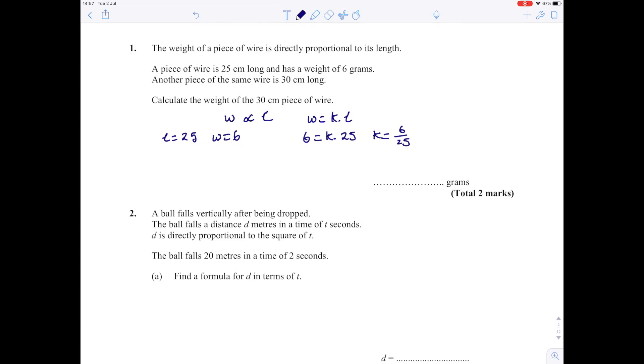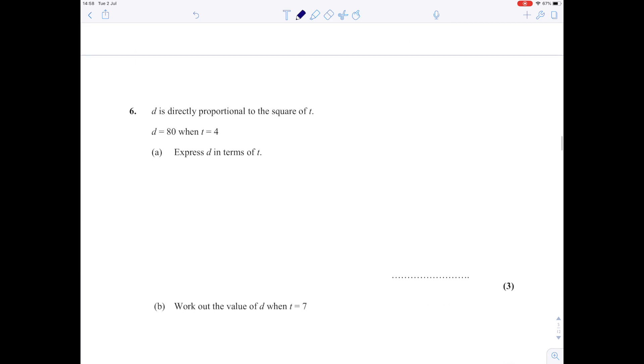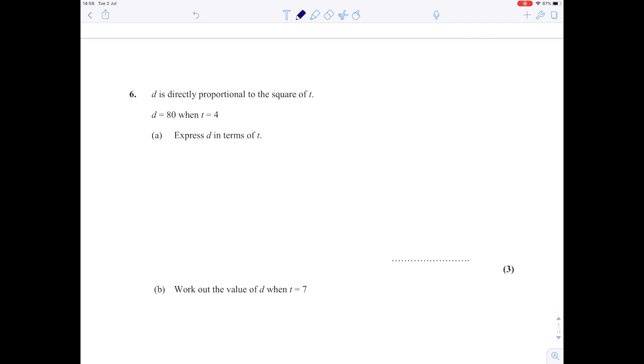This means the connection between the weight and the length is that w is 6 over 25 multiplied by l. That's going to work for whatever value of l and whatever value of w. When we're told the wire is 30 centimeters long, the weight is 6 over 25 multiplied by 30, which gives us 180 over 25, which is 7.2. So the weight is 7.2 grams.